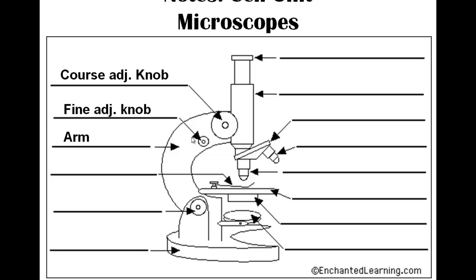The microscope itself is held together by this arm, which is also a handle. When you carry a microscope, you grab one hand under the arm and one hand under the base to keep it from falling and structurally sound. The arm controls everything on top — the focus knobs, the tube moving up and down, and it holds the objective lenses. We have stage clips which hold the slide in place while you use other controls to move the stage back and forth and left and right so light passes through it.